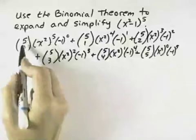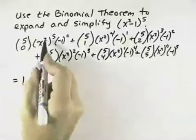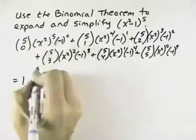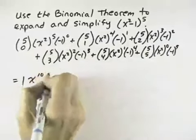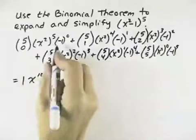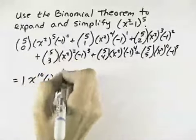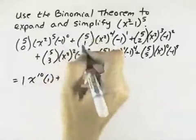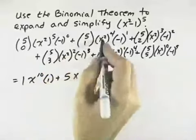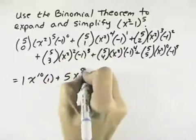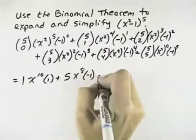So evaluating C(5,0), we get 1. x squared to the fifth, multiplying that together, is x to the tenth. Negative 1 to the zero is 1. C(5,1) evaluates to 5. Then we have x squared to the fourth, which is x to the eighth, and a negative 1.